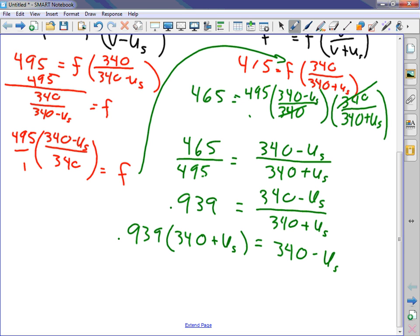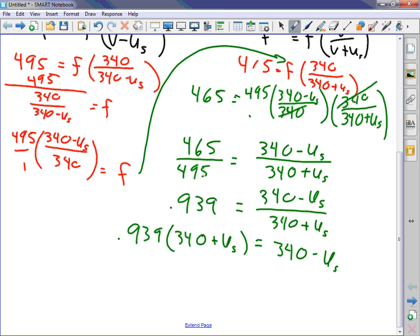Equals 340 minus u sub s over 340 plus u sub s. Next step, multiply by whatever from the denominator. So 0.939 times 340 plus u sub s equals 340 minus u sub s.